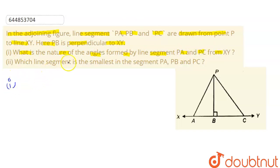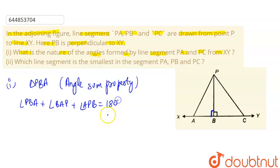So the first part is, we need to tell the nature of angles. See, if this is 90 degrees, this angle should also be 90 degrees. And in triangle PBA, we know that by angle sum property, angle PBA plus angle BAP plus angle APB will be equal to 180 degrees because all the angles should equal 180 degrees.